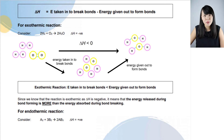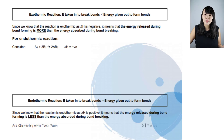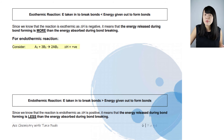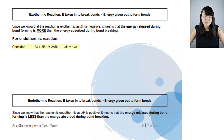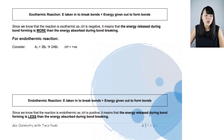Now what about an endothermic reaction? Let's consider this reaction: A₂ reacts with 3B₂ to give 2AB₃, and we are told that delta H is positive.